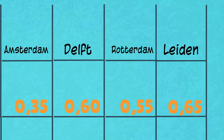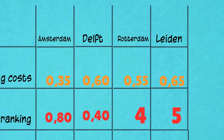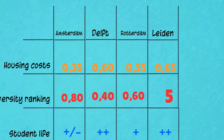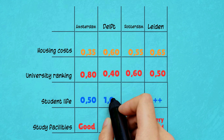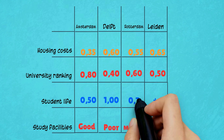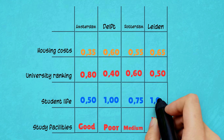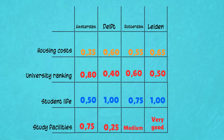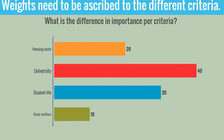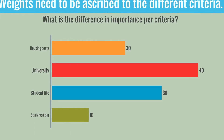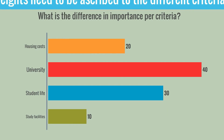However, these standardised scores are only applicable for the current analysis. Weights need to be ascribed to the different criteria. What is the difference in importance per criteria?